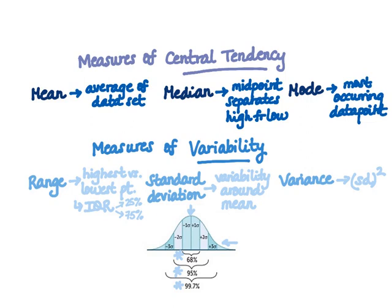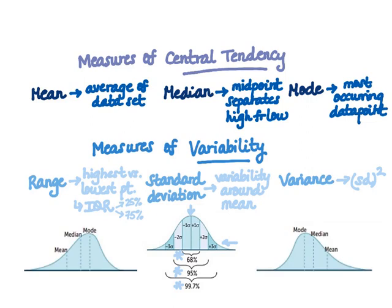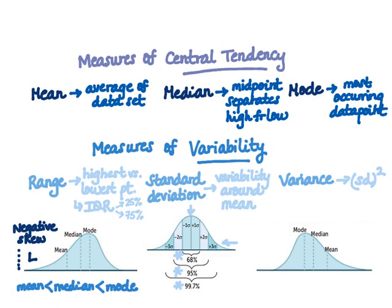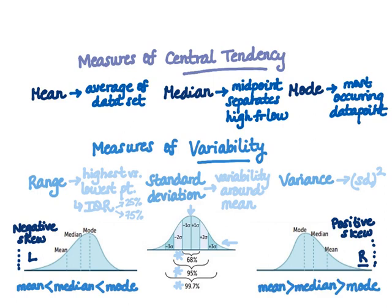There are also non-normal distributions that exhibit either positive or negative skewness resulting in asymmetry of the bell curve. A negatively skewed distribution has a longer tail on the left side, with the inequality: mean less than median less than mode. A positively skewed graph has a longer tail on the right side — quick mnemonic: the right way to be in life is to be positive. The inequality here is mean greater than median greater than mode.